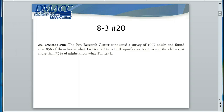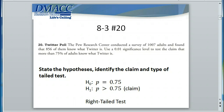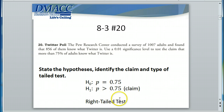The alternative hypothesis will be that P, the population proportion, is greater than 75%, and the null hypothesis will be that P is equal to 75%. The null hypothesis is always a statement of equality — that there is no difference between the population parameter being tested and a value. In this case, P equals 75%. Because we're talking about the population parameter being greater than 75% as our alternative hypothesis, something greater than a value indicates it's to the right side, so we have a right-tailed test.